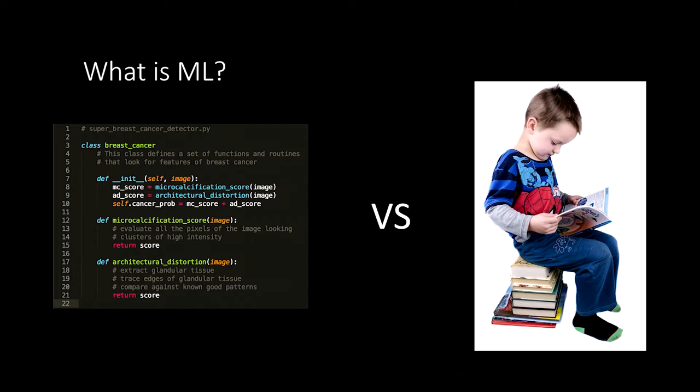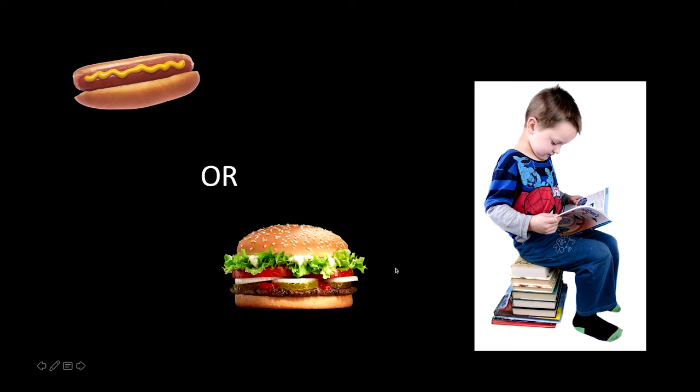What we're really talking about is a set of tools that allow us to be less explicit about the way that we're teaching the computer to perform a certain task, and really do things much the way a child might learn from experience rather than having to create a set of explicit rules. In order to understand this, we're going to go through an example. We're going to talk about how a child might think or learn about discriminating between a hot dog and a hamburger, and then how this works for machine learning.